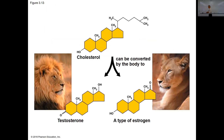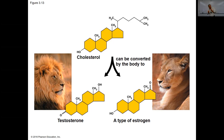Looking at the two sex steroids, notice how similar testosterone and estrogen are — they're barely different. They have slightly different functional groups, and so they're really similar molecules but they have really big differing biological effects. This is a message that even small changes in molecules can lead to big changes in biological effect.